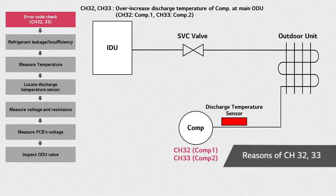These are CH32 and CH33 errors. These errors are caused by excessive discharge temperature of compressors 1 and 2 respectively, so their solutions are quite similar.